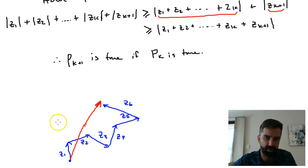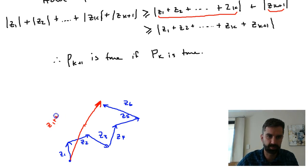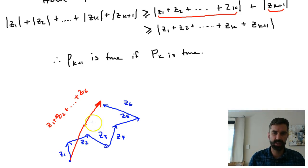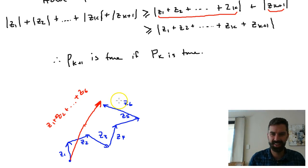That red line I've drawn represents the case where we have z1 + z2 + ... + z6. It's really just saying that in terms of distance — which is the modulus — it's quicker to take the direct route than to take all of the complex numbers individually. Okay, thanks for watching, I hope that made sense.